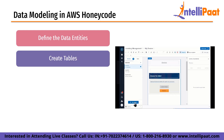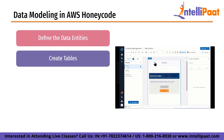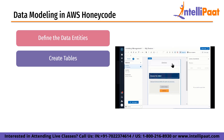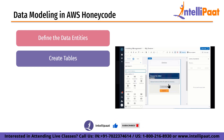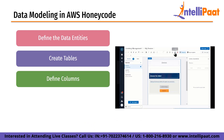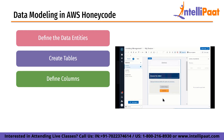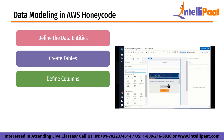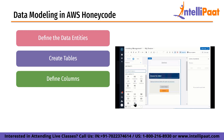Next is to create tables. After defining the data entities, the next step is to create tables that represent each entity. Each table should have a unique name and should correspond to an entity in the data model. Tables are used to store data records for each entity. Once the tables are created, the next step is to define columns. Columns are used to store specific types of data such as text, numbers or dates. Each column should have a unique name and should be defined in terms of its data type and any constraints that apply.